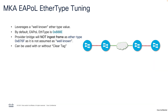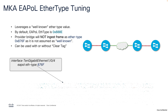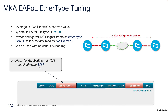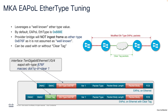The third enhancement is MKA E-POL EtherType tuning. This ensures Ethernet frames are correctly processed by network devices, especially provider bridges. Typically the EtherType for E-POL is 0x888E, which may be treated differently by provider bridges. By changing the EtherType to a custom value like 0x876F, we prevent the provider bridge from misinterpreting the frame, allowing it to be handled as a regular Ethernet frame. This adjustment can be applied with or without clear tag.